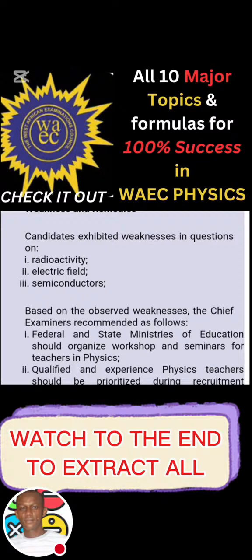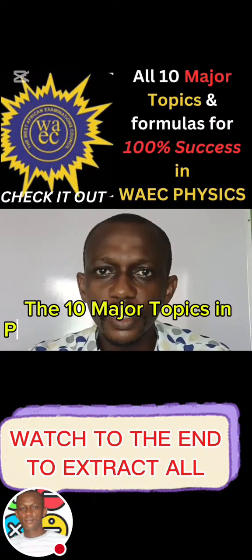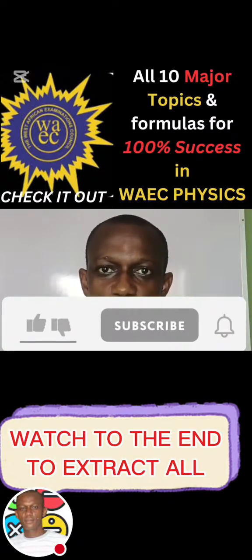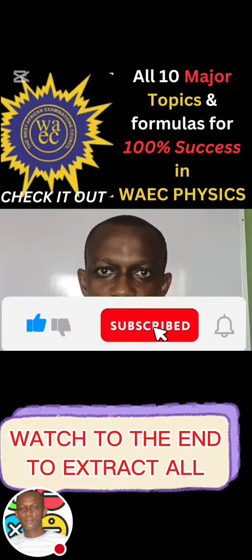Candidates exhibit weaknesses in questions on, in fact they analyze this one properly: one, radioactivity; two, electric field; three, semiconductors. Those are the major three topics for that year, 2021. These years is enough for us to back test all those things I have told you. You can rewind the video, go back again and watch again and jot down. Please, it's very important. In this video I'll be discussing the 10 major topics and their formulas in physics for you to be able to pass your WAEC O-level.